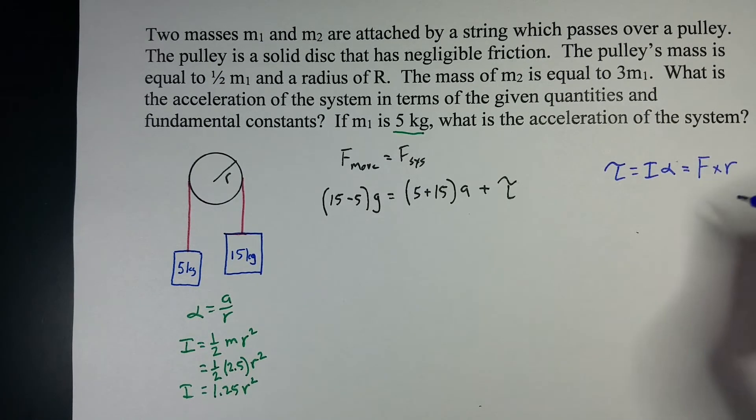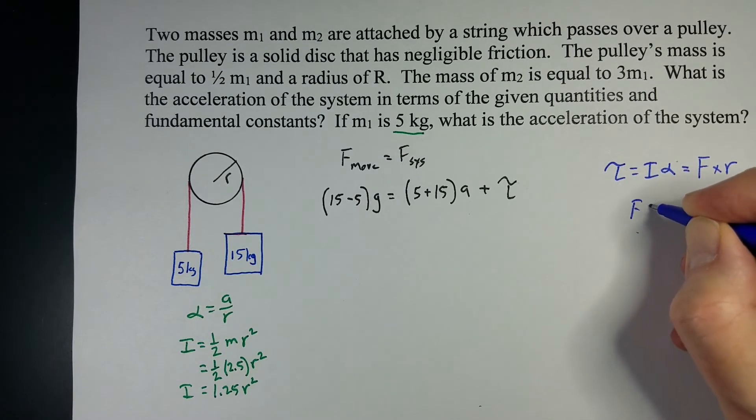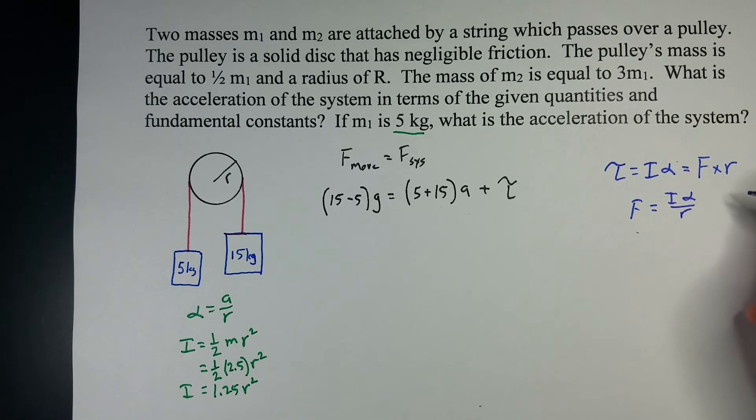We know that torque can be found by either moment of inertia times the rotational acceleration or force cross distance. Let's solve this for F. F equals I alpha over R. We know I is actually 1.25 R squared, we still divide by R, and alpha is A over R. We've got two R's on top, two R's on the bottom. So we get 1.25 A is going to go in for our force.